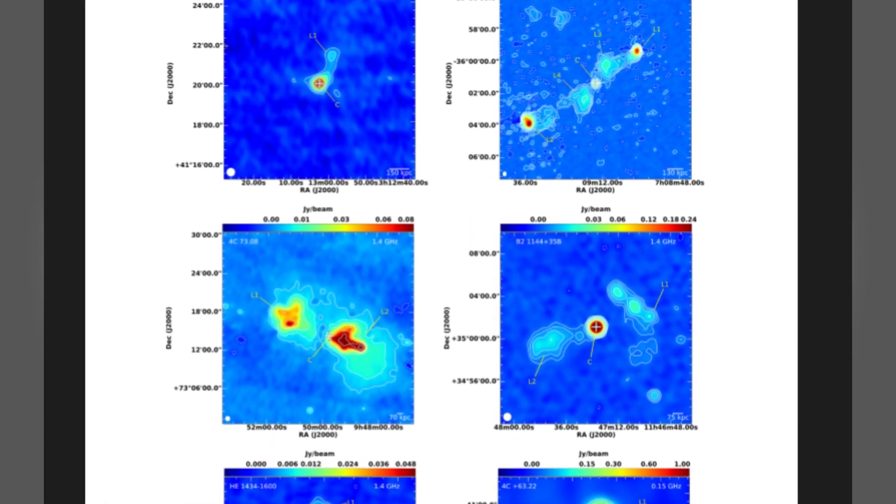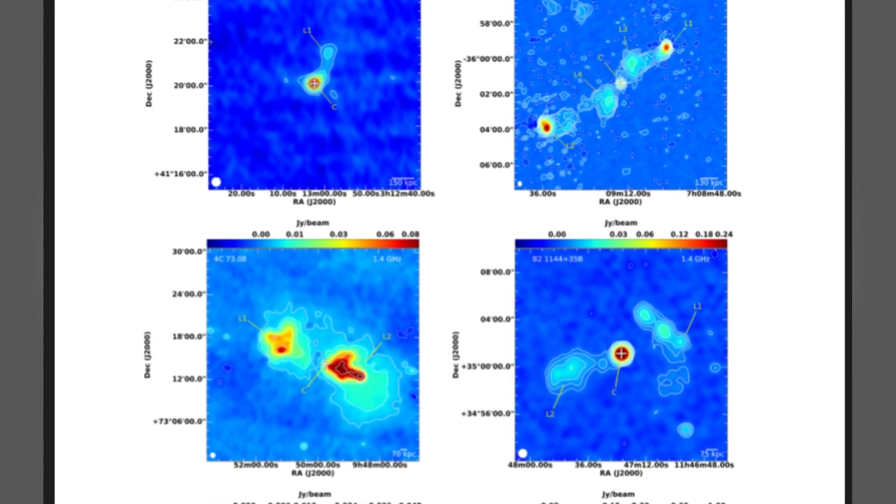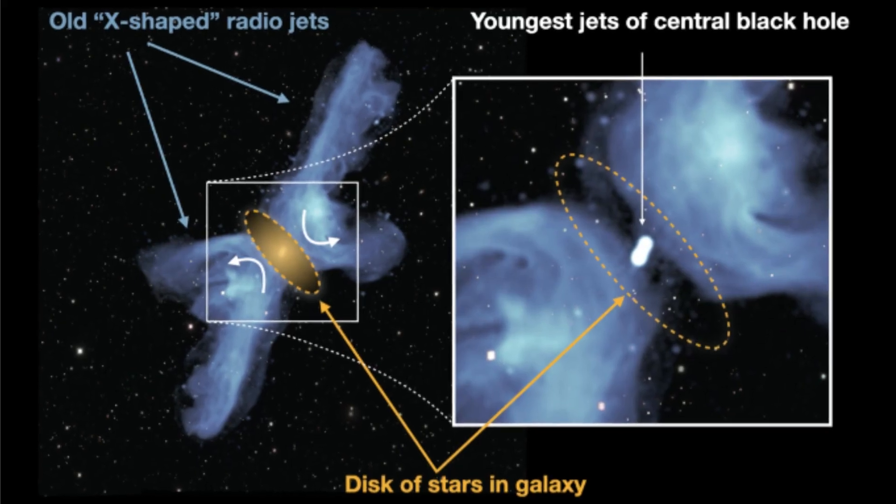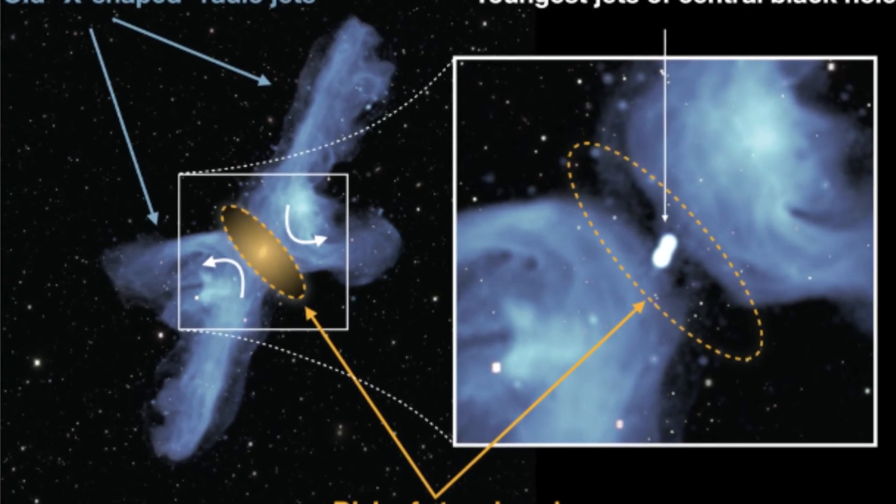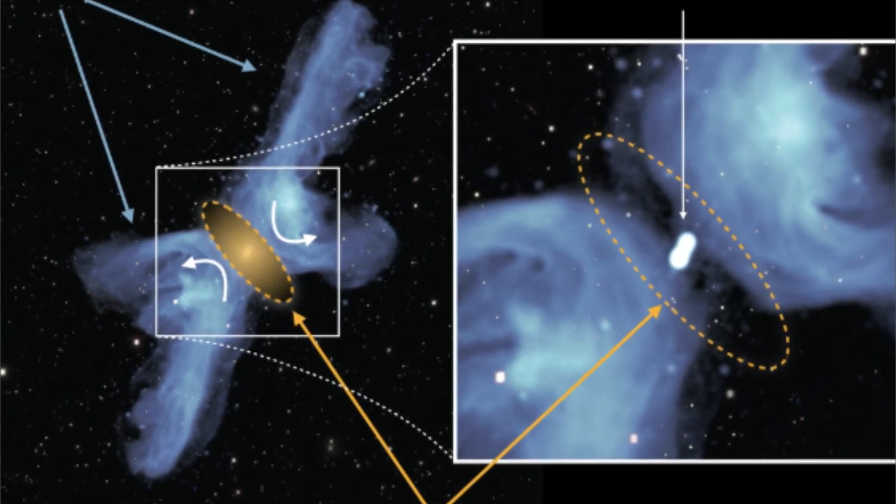SARAO released a graphic highlighting the pattern of the jets. Astronomers had considered that X-galaxies might be created by changes in a black hole spin direction, or by two black holes working as a team.